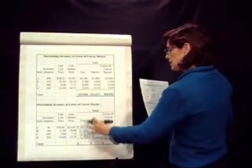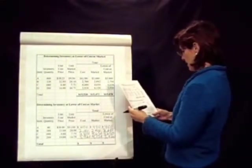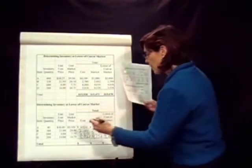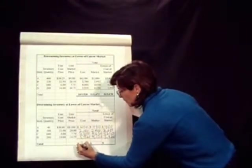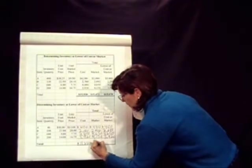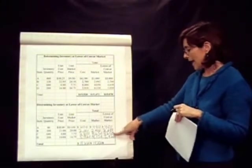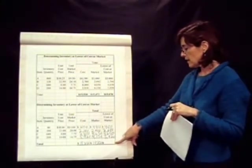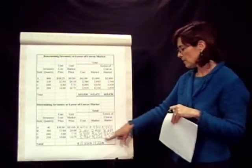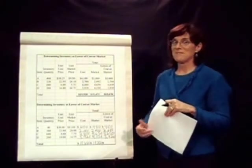So the last thing that we need to do here is add the cost and the market. And the odd thing about this is that the cost and the market actually have the same total. But when we use the lower of cost or market method, when we add those down, we're going to find that it's going to be lower than the total cost or the total market because we took each item individually and looked at the cost or the market, and we'll come up with a lower number.